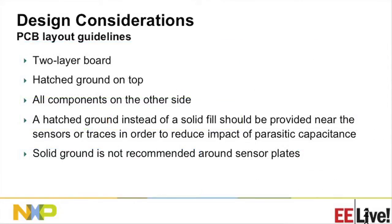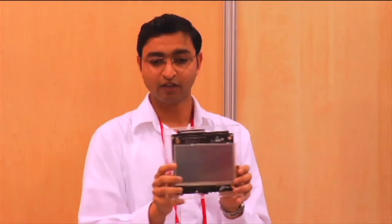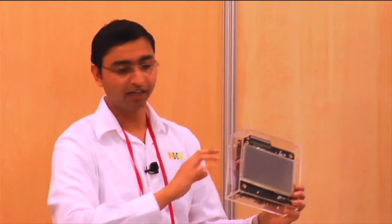To summarize, these are some good design practices when it comes to layout. It's good if you have a two-layer board. A hatched ground instead of a solid fill around your traces helps reduce parasitic capacitance. All other components other than your sensor should be mounted on the other side to reduce electrical interference. I have an LCD-based design here where you can see it has an NXP microcontroller and NXP capacitive sensor — it demonstrates a front panel of a car where you can set your temperature, and all the other devices on the PCB are on the other side of your sensor.